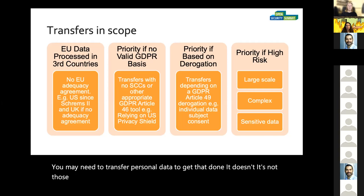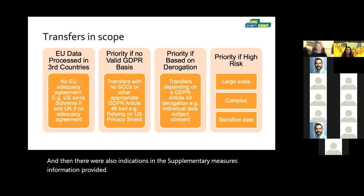Those derogations are not deemed suitable to cover regular bulk transfers all the time. There were also indications in the supplementary measures information provided in the essential equivalence guidance that if a transfer was large-scale, complex, and involved sensitive data, it was also a priority.